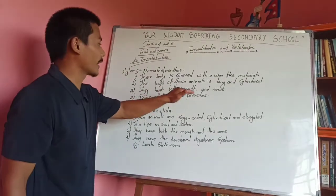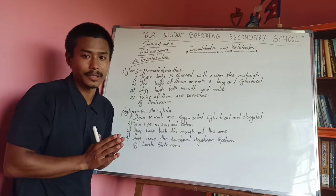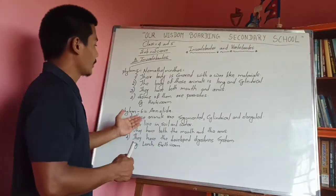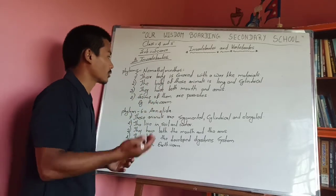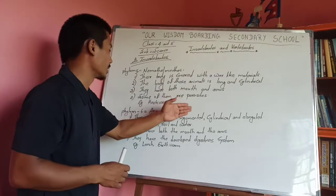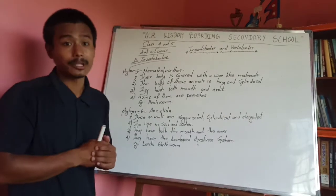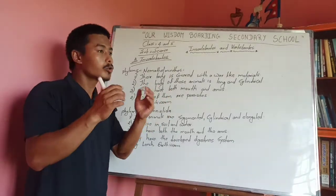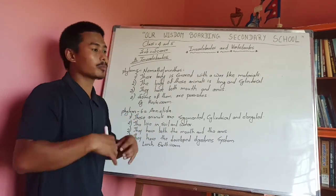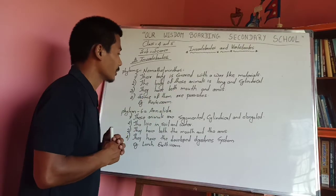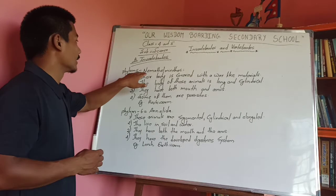These animals depend on other animals for food, so they are parasites. They can trace and depend on their host animals. For example, hookworm — hookworm feeds on its host. These are called parasite animals of Phylum Platyhelminthes.